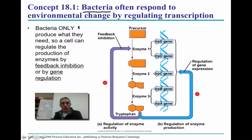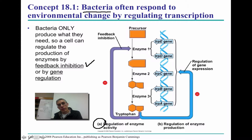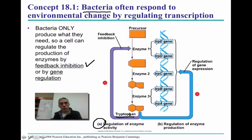For bacteria, being a very simple organism, they're simply going to produce what they actually need. They regulate the production of enzymes or proteins by two different methods. One of them is feedback inhibition in the production of the amino acid tryptophan. If there's plenty of tryptophan in the environment, that tryptophan is going to inactivate the enzyme in this metabolic pathway, so the cell can no longer produce tryptophan. That's feedback inhibition — using information from the environment to turn off or turn on the production of this amino acid.